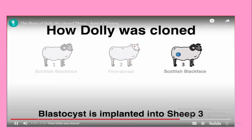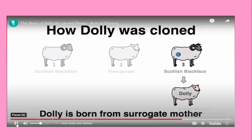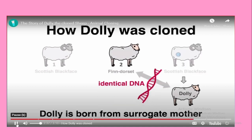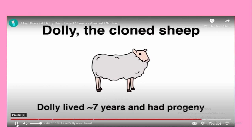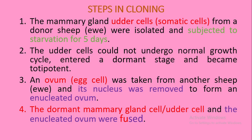The cell developed to the blastocyst stage. Sheep three, again a Scottish Blackface, was used as a surrogate mother. The blastocyst was implanted into sheep three and some months later Dolly was born. Dolly had the exact same genetic information as sheep two, which donated the nucleus containing the DNA. Dolly lived almost seven years and even gave birth to progeny.